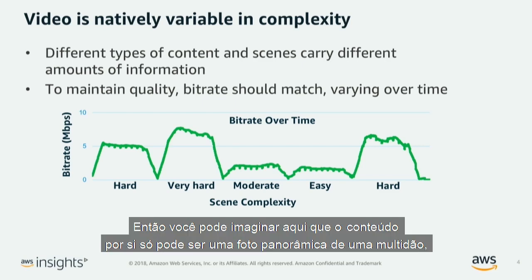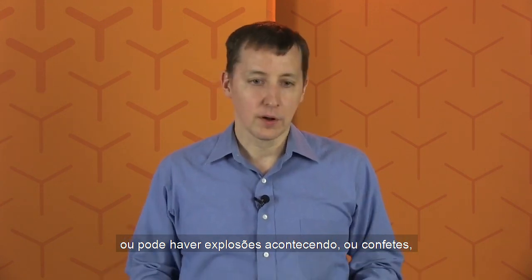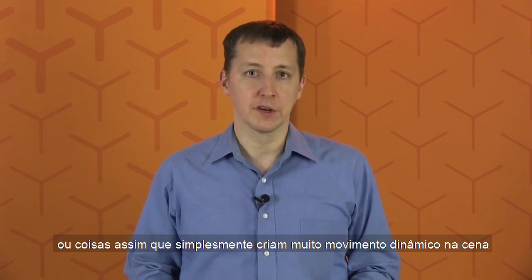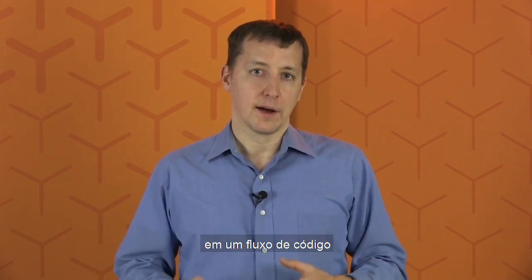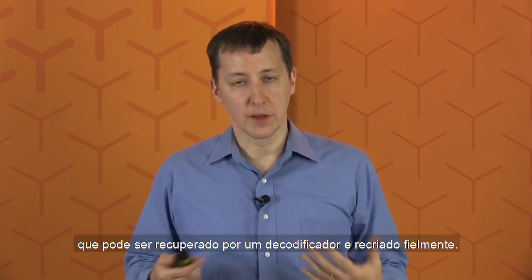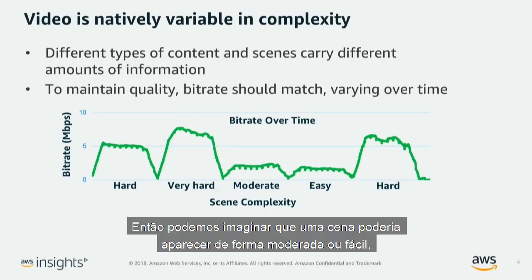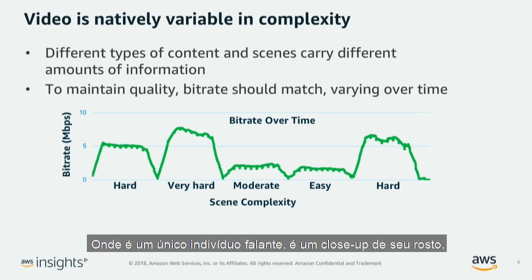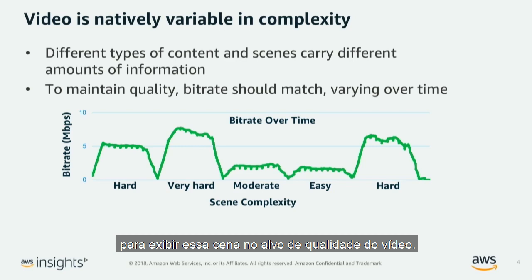Very hard content might be a panning shot of a crowd, explosions, confetti — things that create a lot of dynamic motion on the scene. It requires a lot of bits to accurately convert all that dynamic motion and activity into a code stream that can be recovered by a decoder and recreated faithfully. Then a moderate or easy scene might be very much like this one: a single speaking individual, a close-up of their face, no panning whatsoever, and not a lot of motion. So not very many bits are necessary to deliver that scene at the quality target.